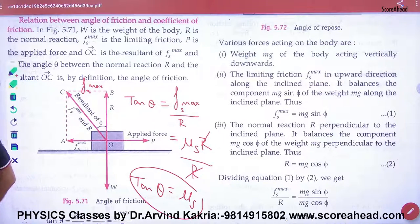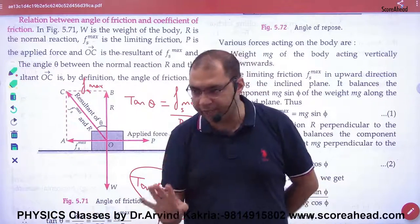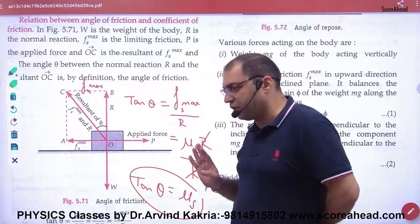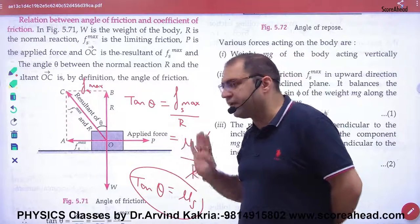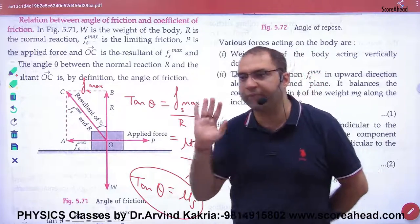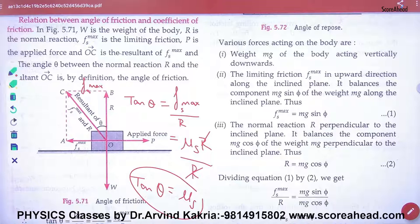This. Now where is the angle of friction? You will get a numerical. Normally in numericals, mu s and mu k are given. But sometimes mu s will not be given. You will be given angle of friction, like 60 degrees. So what is tan of 60? Root 3. So mu s is root 3. Okay, when there is a requirement we will see the question. But in theory, what is the angle of friction?